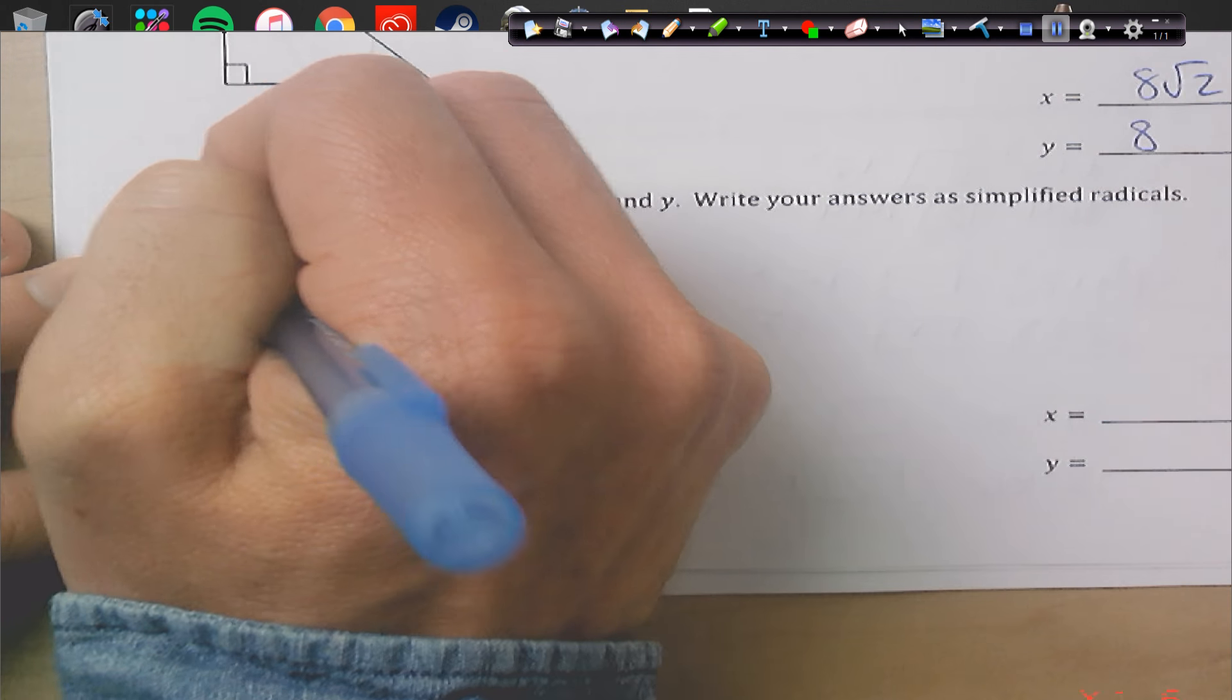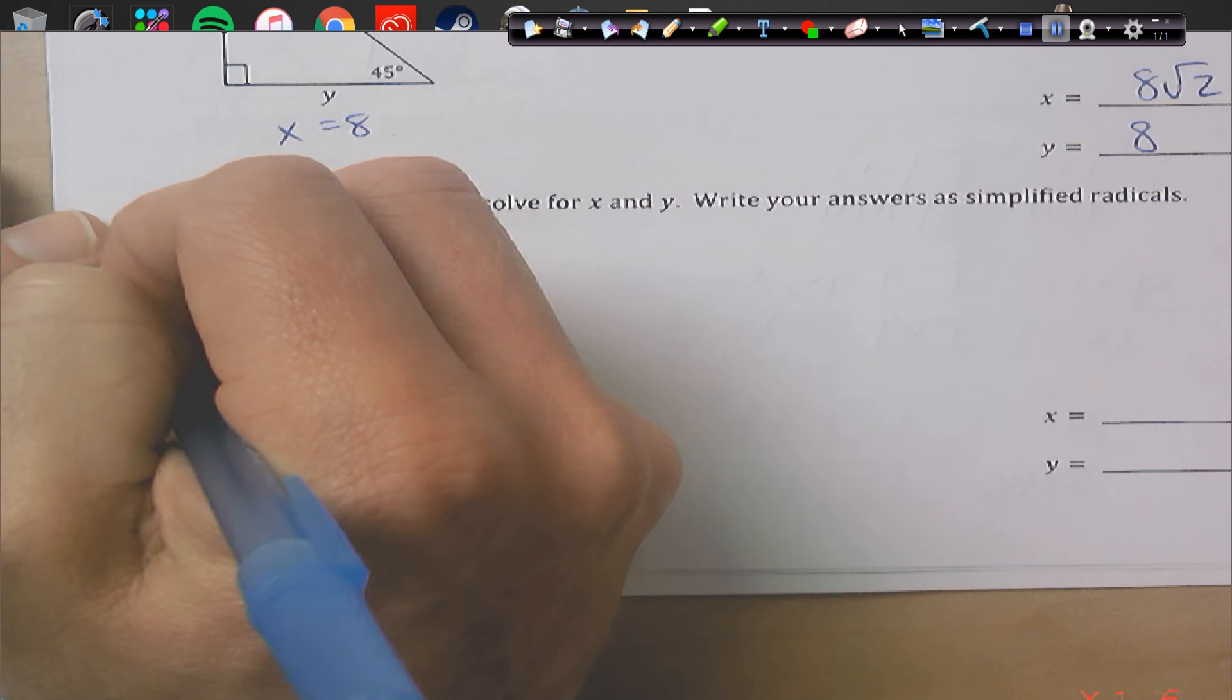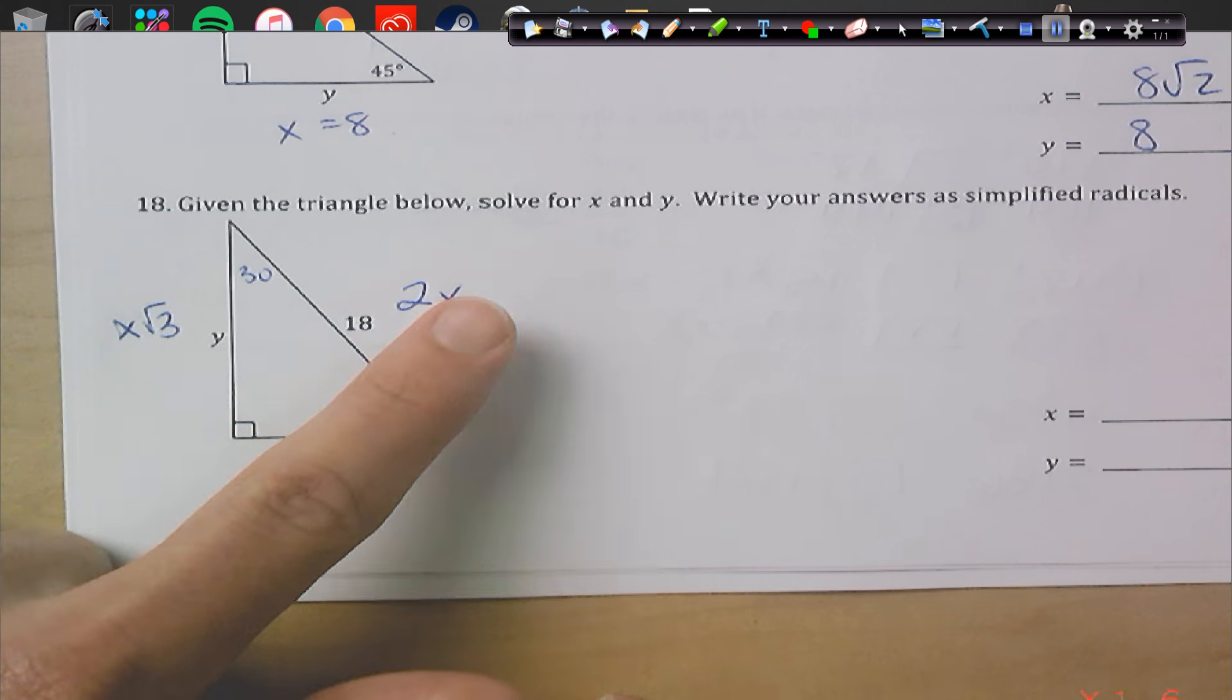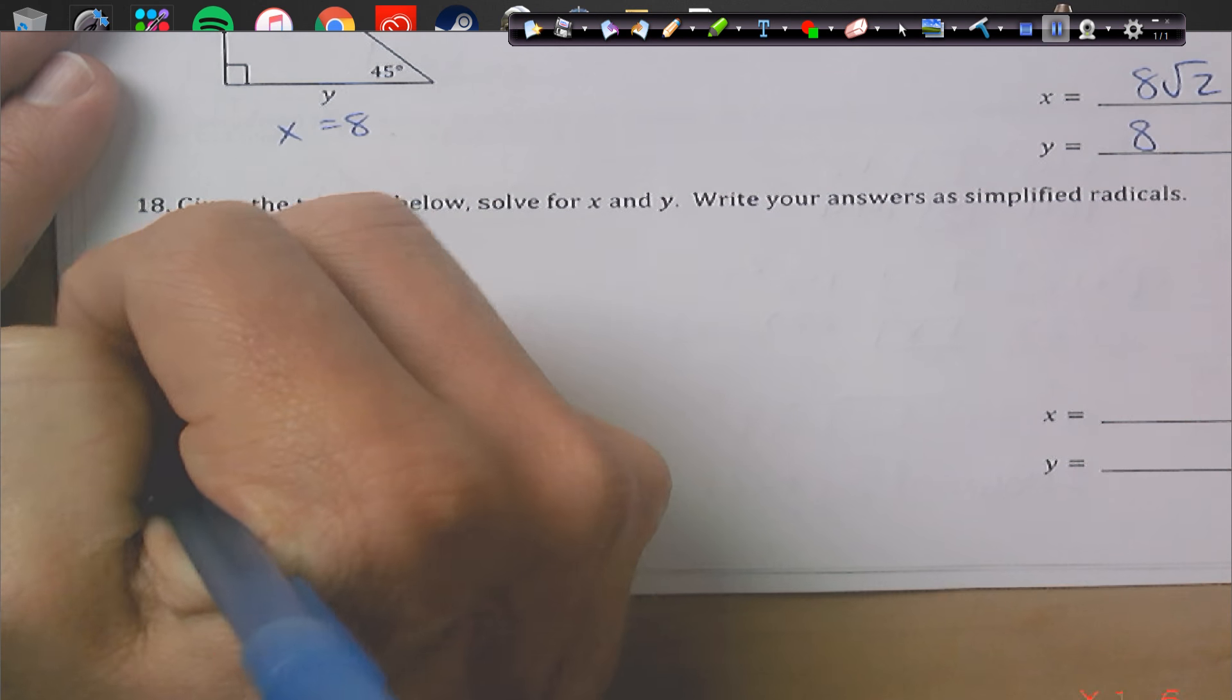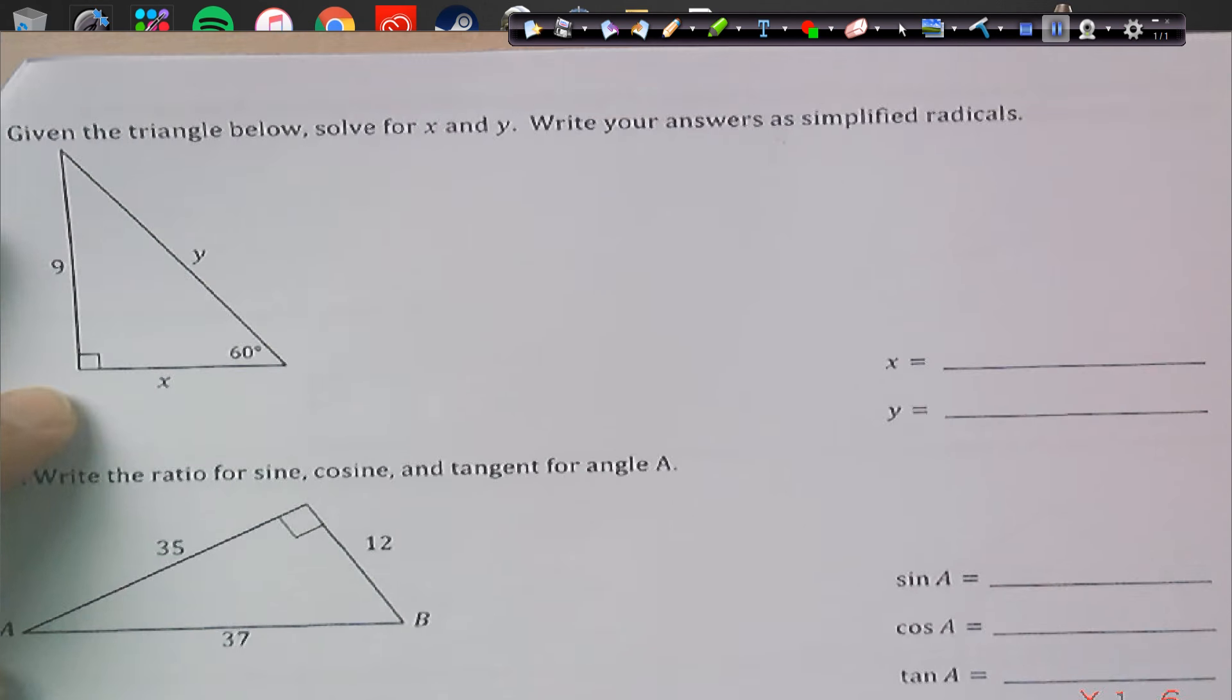30, 60, 90. So, cross from 30 is x. This is going to be x rad 3. And then 2x. So, if 18 is 2x, x is going to be 9. And this is going to be 9 rad 3.